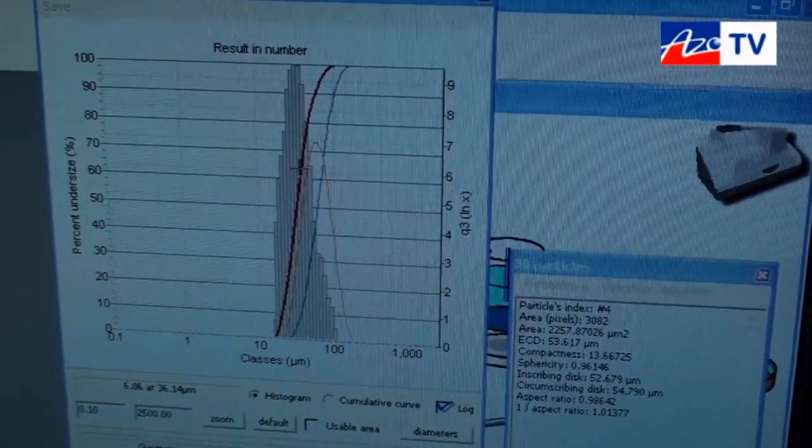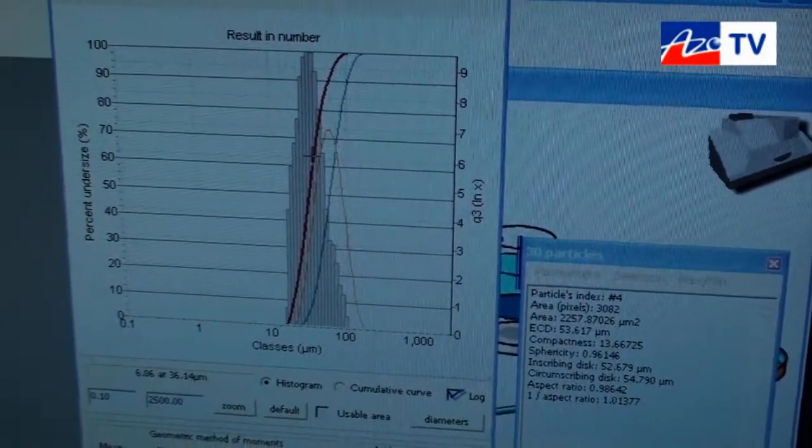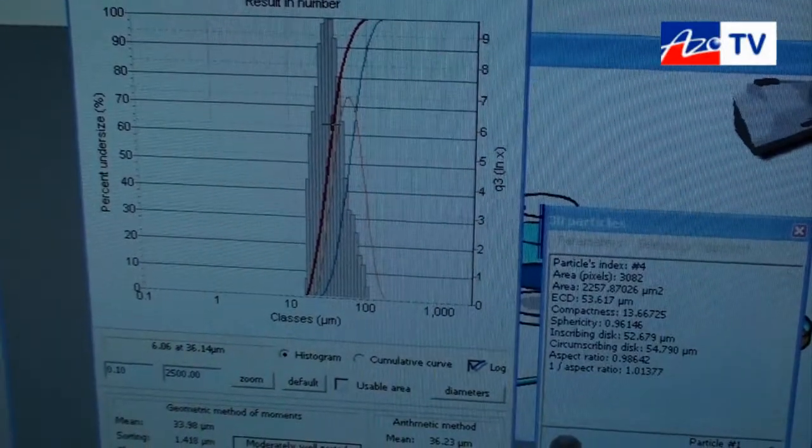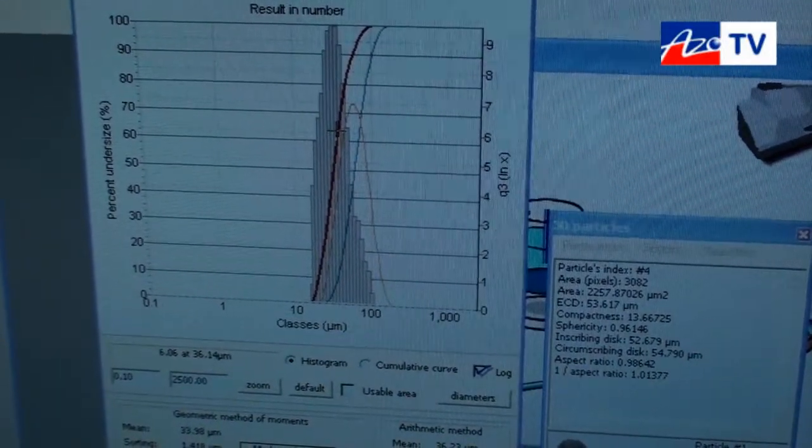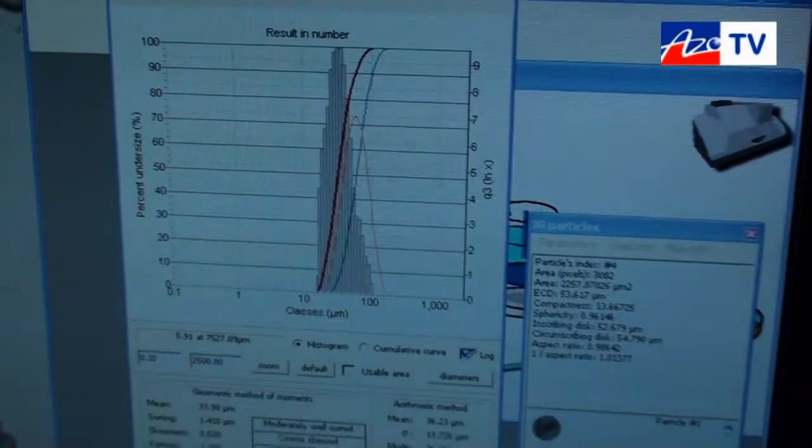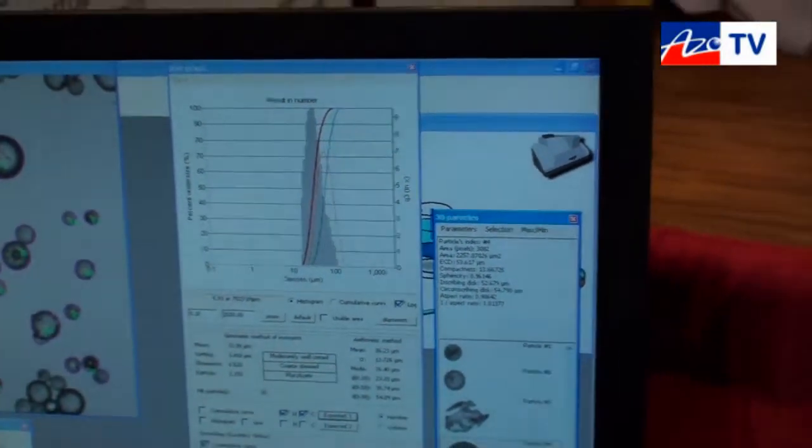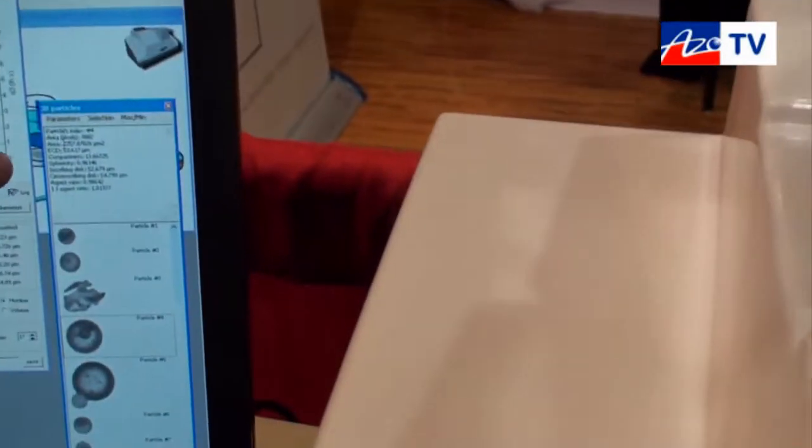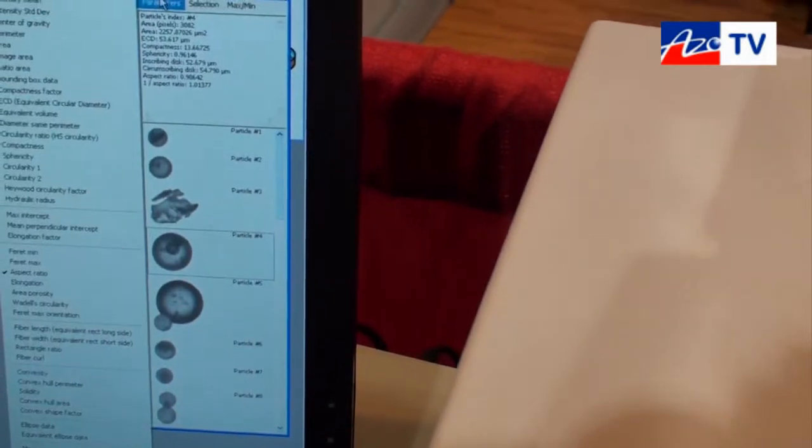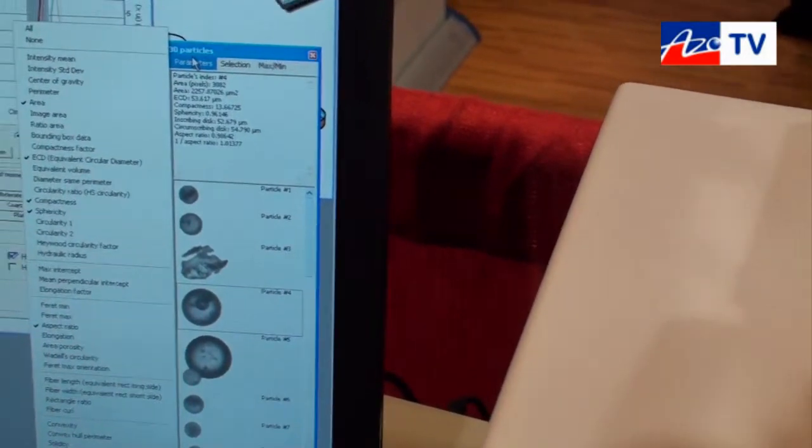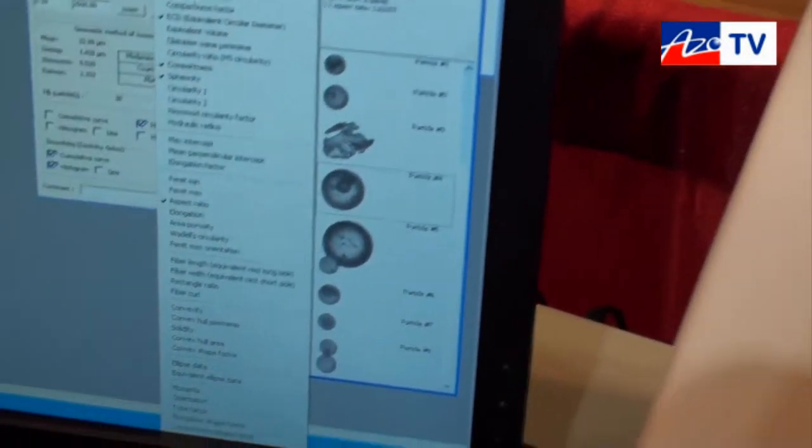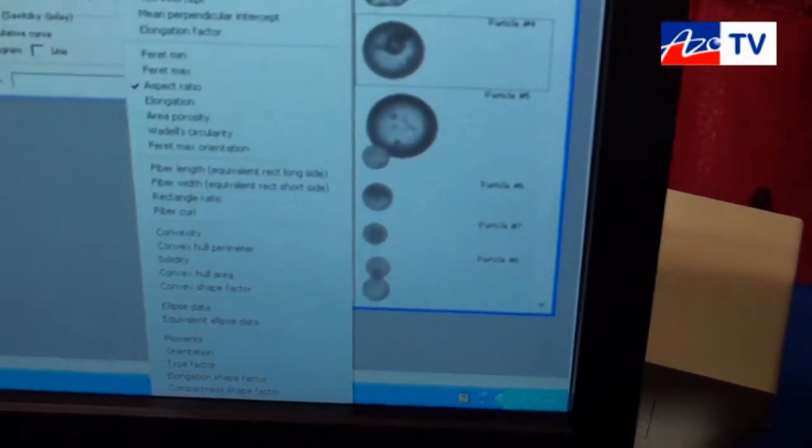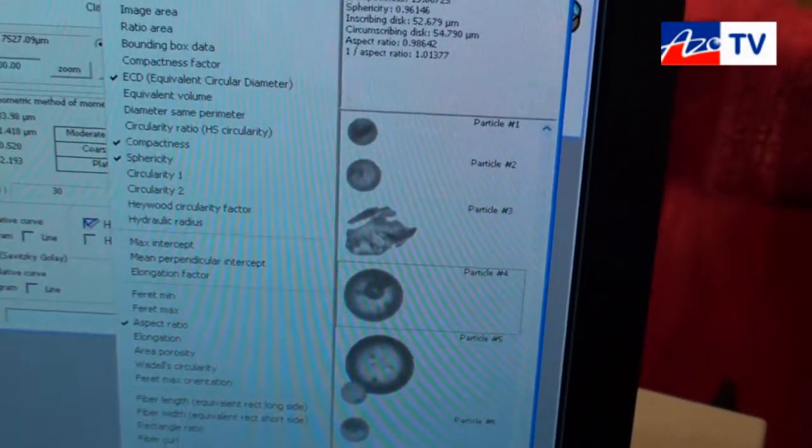We can also get information on one particle and look at a varying degree of parameters, so various size and shape factors, compactness, equivalent circular diameter of a non-circular particle.